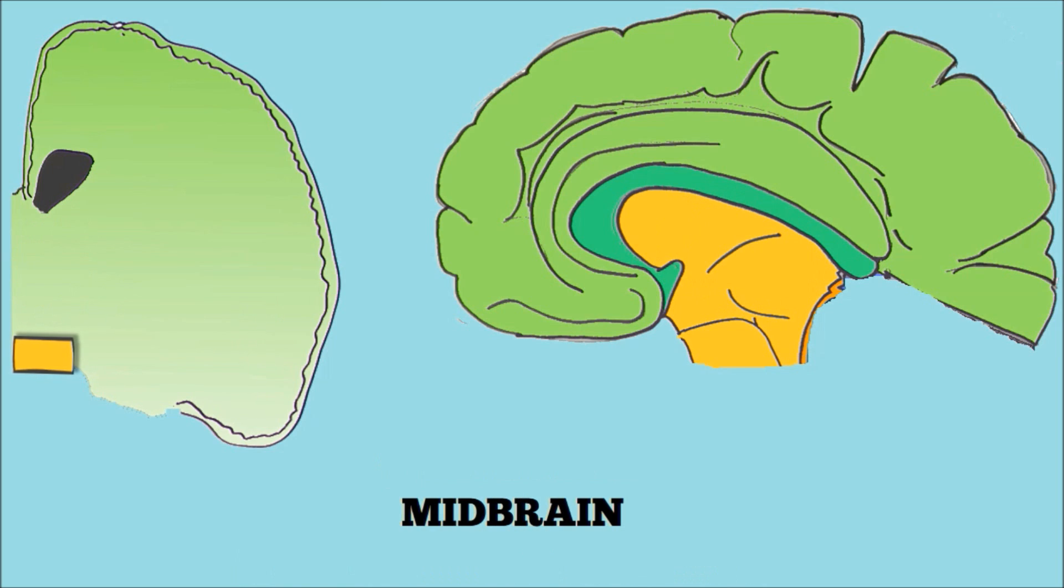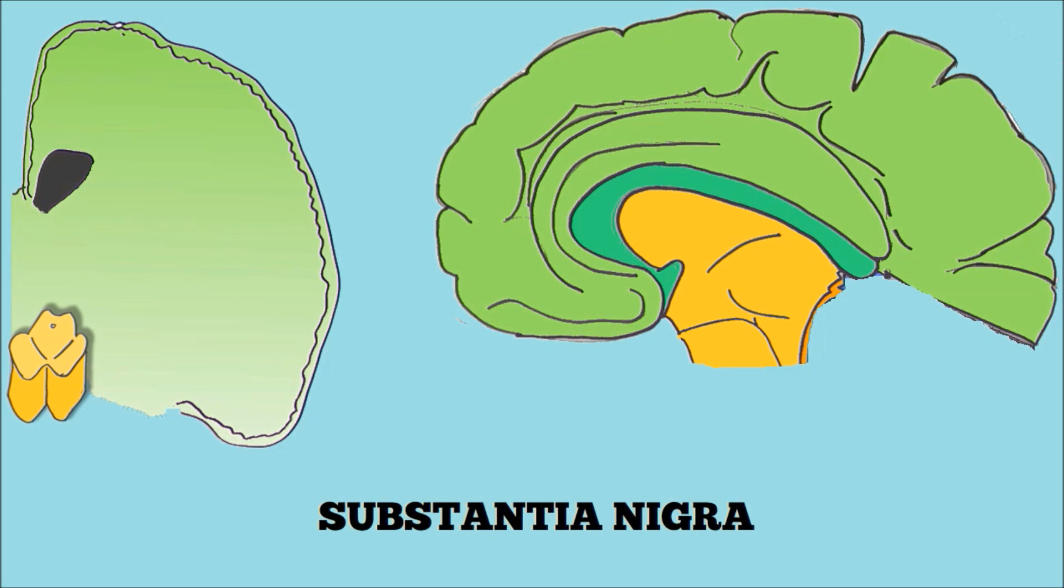All that we have left now is the midbrain, but within the midbrain is a very important structure. I'm of course talking about the substantia nigra. The substantia nigra consists of two parts: the pars reticulata and the pars compacta. It is the degeneration of dopaminergic neurons in the pars compacta of the substantia nigra that characterizes Parkinson's disease.